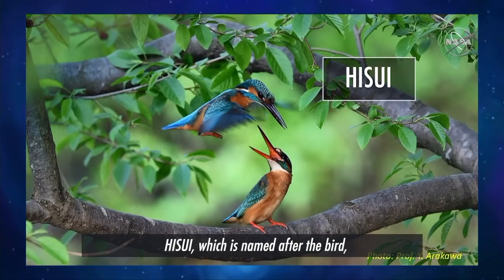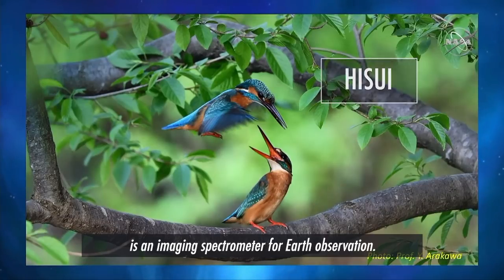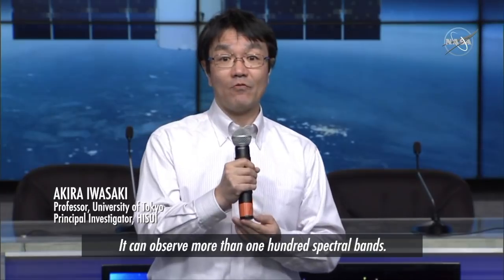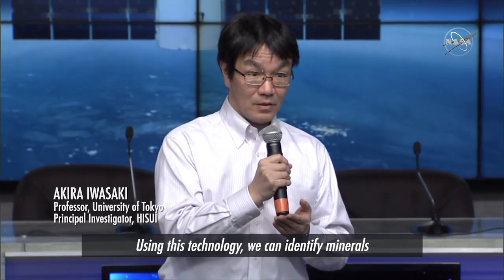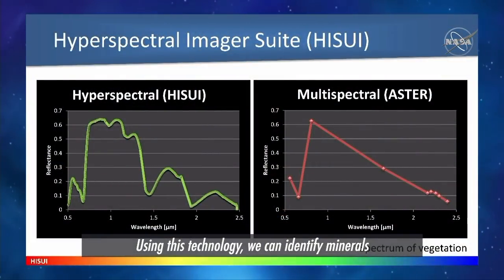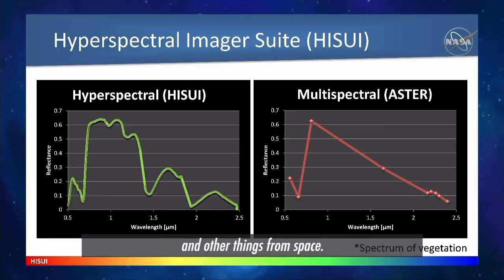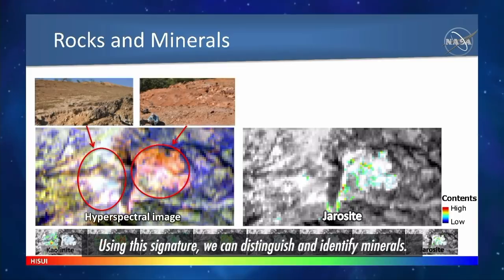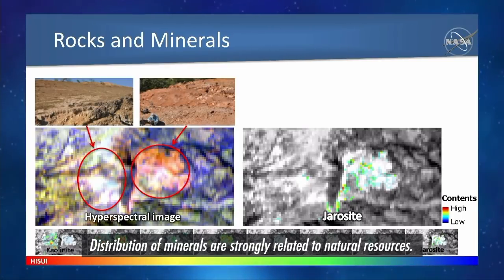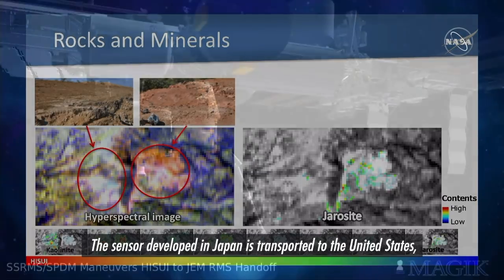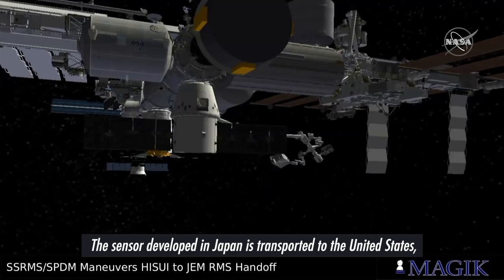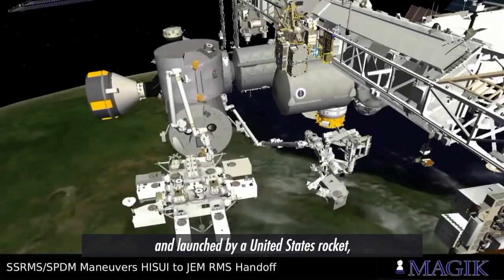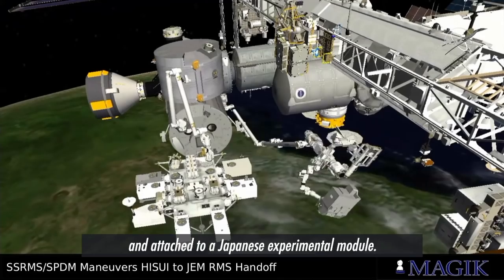Hisui, which is named after the bird, is an imaging spectrometer for Earth observation. It can observe more than 100 spectral bands. Using this technology, we can identify minerals and other things from space. Minerals have their own specific absorption band in the spectral signature, and using this signature we can distinguish and identify minerals. Distribution of minerals is strongly related to natural resources. The sensor developed in Japan is transported to the United States, launched by a United States rocket, and attached to the Japanese experimental module.